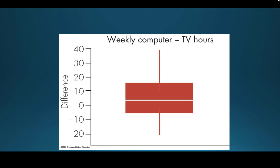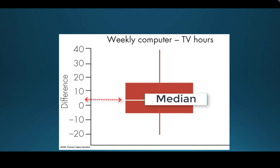The graphical displays are the same for paired data too. Here we have a boxplot of the differences we calculated — it's a quantitative value, so we can use boxplots, histograms, or stem-and-leaf plots. When you look at this boxplot, the median appears slightly above zero, indicating there is a difference in TV and computer time. Since it's positive and our differences were calculated as computer minus TV, it suggests students on average are spending more time on their computer than on their TVs.